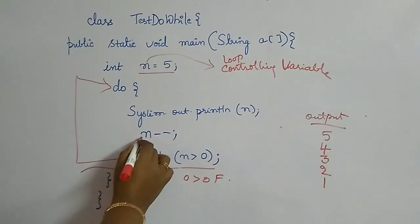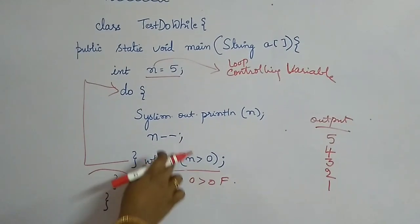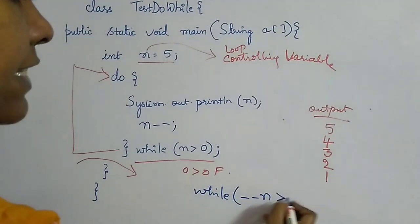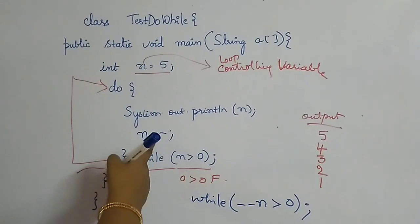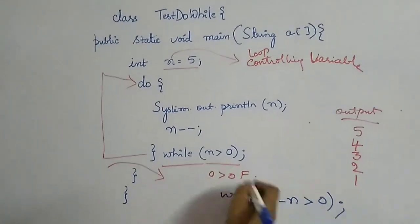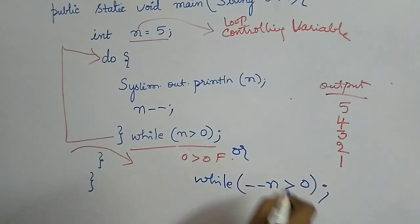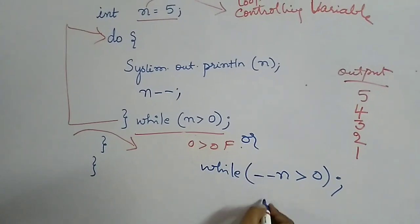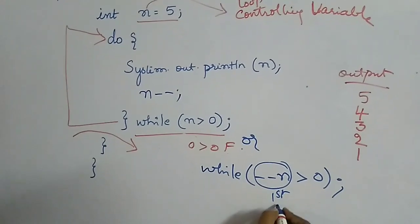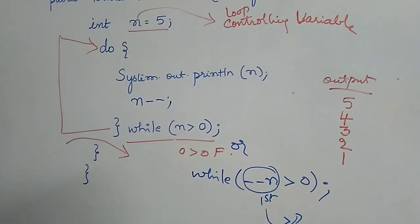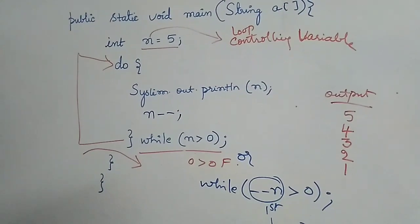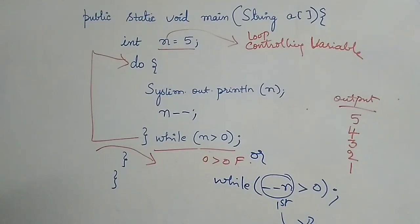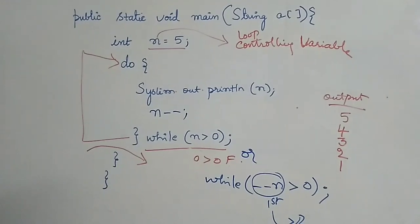An important point: you can also put the update inside the while condition itself. Instead of a separate n-- statement, you can write while (--n > 0). Since pre-decrement has higher priority than the greater-than operator, --n executes first and then the result is compared. Either way, remember: always have a loop controlling variable and always update it to avoid an infinite loop.